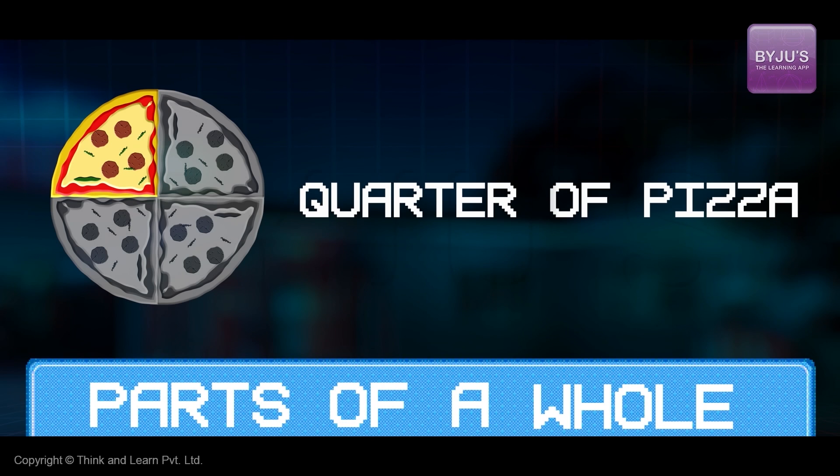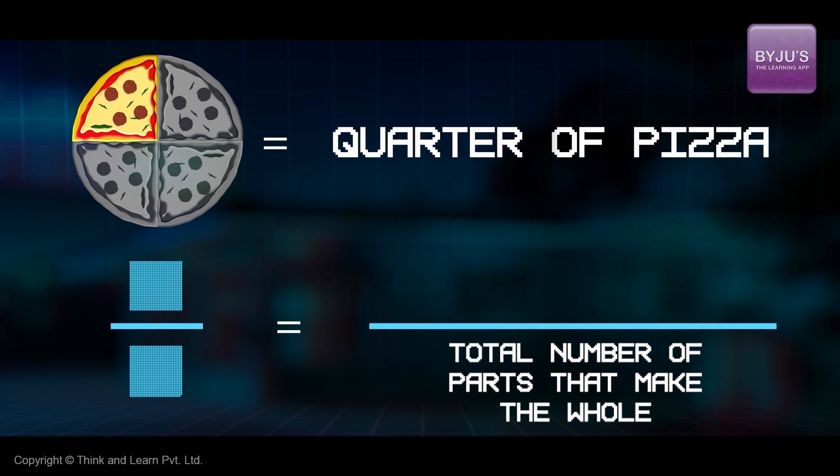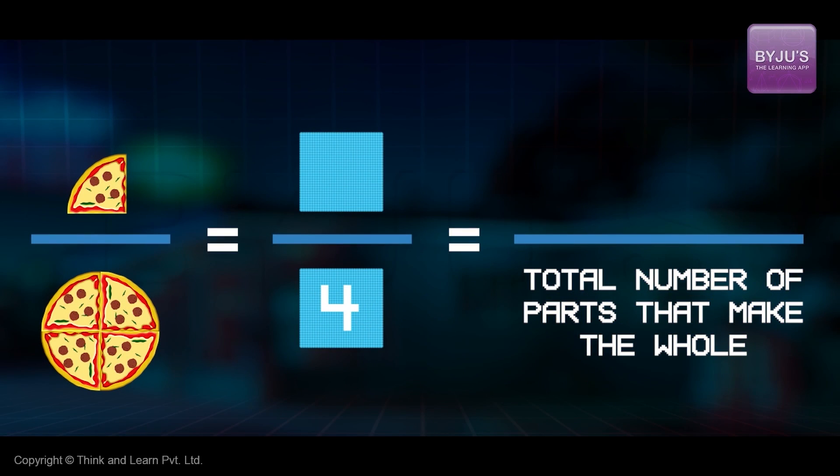So, in the language of mathematics, the number at the bottom tells us how many parts the whole pizza is divided into. When you took a quarter, we divided the pizza into four parts. So, you write four at the bottom.